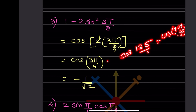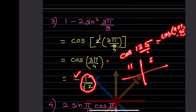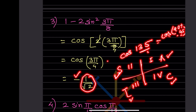Using the CAST rule: in the fourth quadrant cos is positive; in the first quadrant all are positive; in the second quadrant sine is positive; in the third quadrant tangent is positive. Since 135° falls in the second quadrant, cosine is negative there.